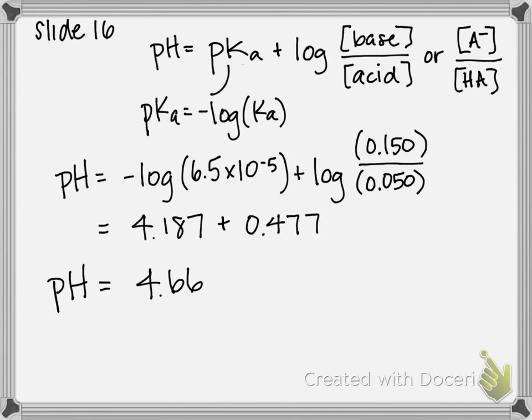The Henderson-Hasselbalch equation cuts down on a lot of work for calculating pH of a buffer. As long as you have a buffer solution, you don't have to go through the RICE chart from slide 11. You can use Henderson-Hasselbalch instead. Our answer for the pH of this buffer solution is 4.66.